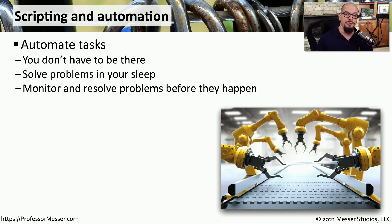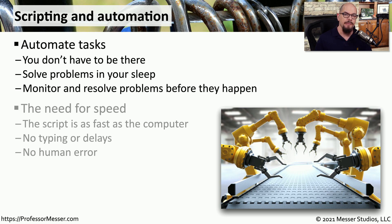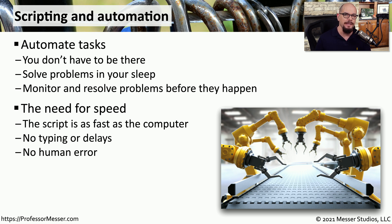If you've ever done any type of automation or scripting with an operating system or devices on your network, then you know what a benefit it can be. You don't have to be there to perform these functions — they can be done automatically. If problems occur, they can be automatically identified and a series of tasks can occur to resolve the problem without any type of human intervention. This also happens very quickly. Because it's happening at the speed of the computer, you're able to identify and resolve these problems much faster than anyone would be able to type interactively into a keyboard.